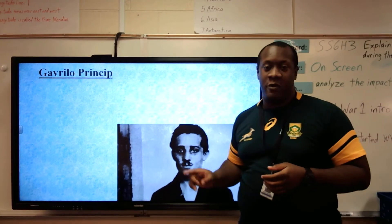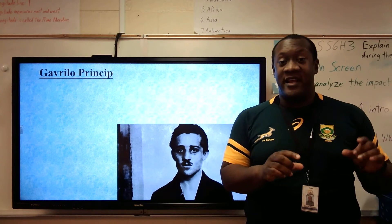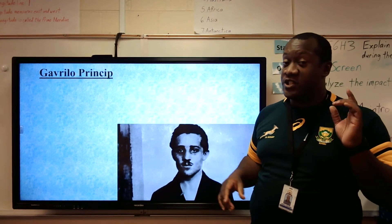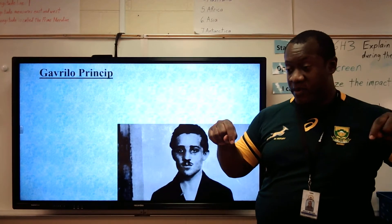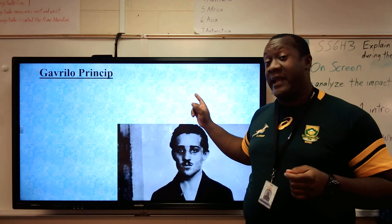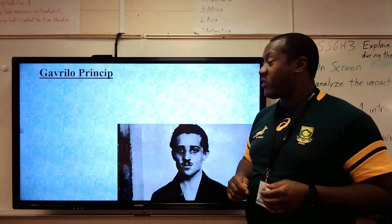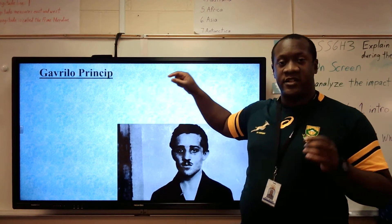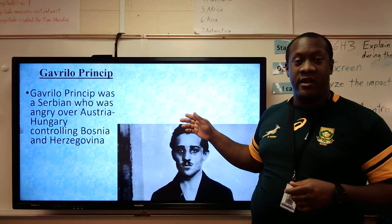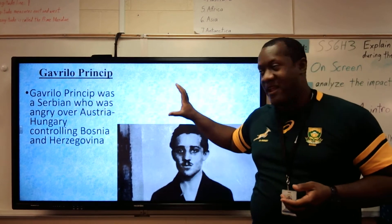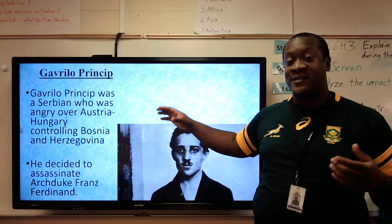So here's our friend Gavrilo Princip. If you look down in the description box, I've linked a three-minute History Channel video that talks about the assassination — it's really good to watch because you'll understand how the assassination took place and what the results were. Hats off to the History Channel. Gavrilo Princip was a Serbian who was angry over Austria-Hungary controlling Bosnia-Herzegovina. He decided to assassinate Archduke Franz Ferdinand.